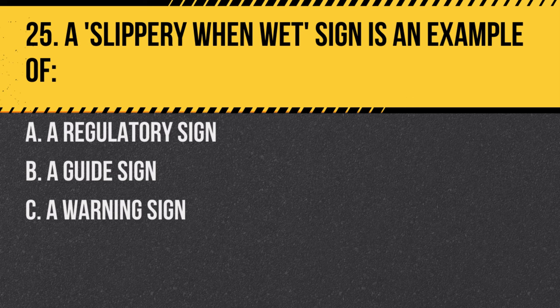Question 25. A slippery when wet sign is an example of: a. A regulatory sign. b. A guide sign. c. A warning sign. Answer: c. A warning sign. It alerts drivers to potentially hazardous road conditions.